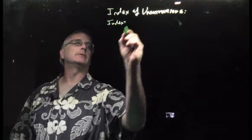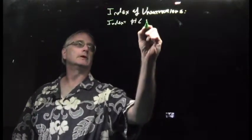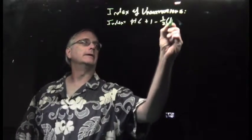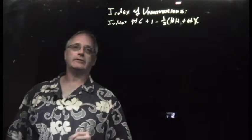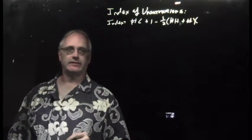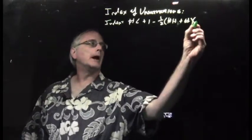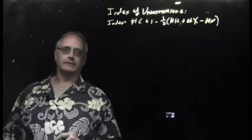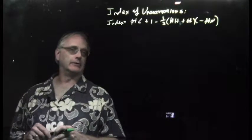Remember, unsaturations, the number of pi bonds or rings or combinations of those two in our structure. It has a fairly simple formula. The index is simply the number of carbon atoms in that formula, plus one, minus one-half the number of hydrogens, plus x for the number of halogens - fluorine, chlorine, bromine, or iodine - minus the number of nitrogens. And that will cover a tremendous number of possible formulas that you might encounter.